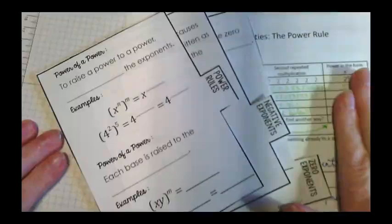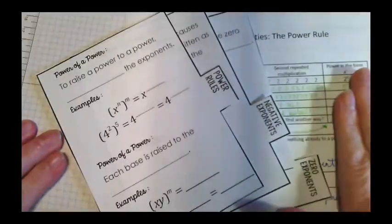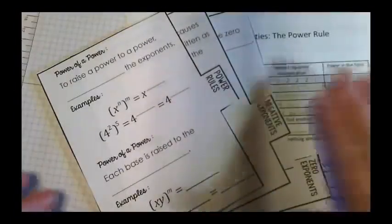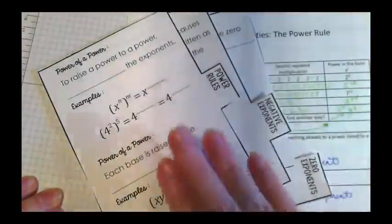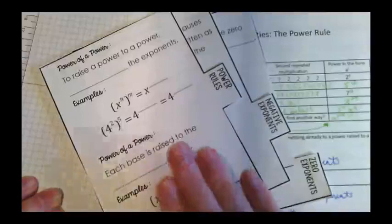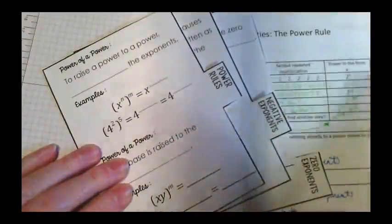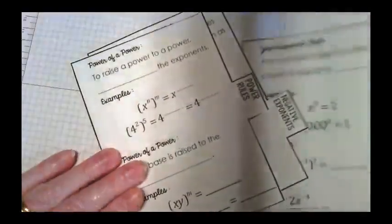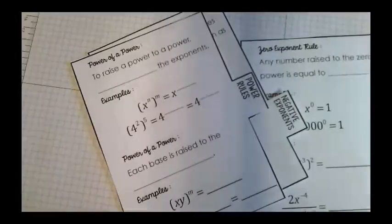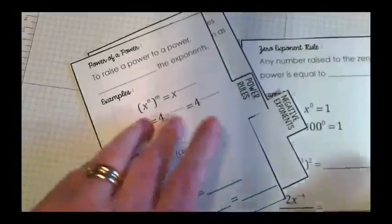I hope you also have your proof sheets with you today because they are related. What we've done here is proving the rules. Now we're making shortcut versions so we don't have to go back to these giant sheets every time. I don't expect you to memorize these, but I do hope you get better at using these rules as we go through the activities over the next couple of days.